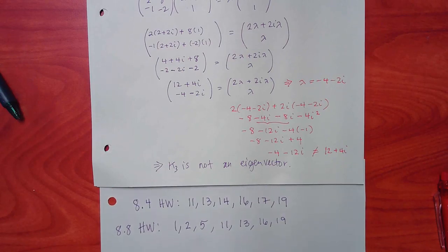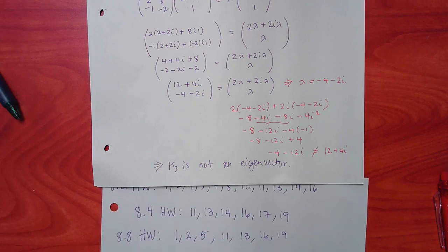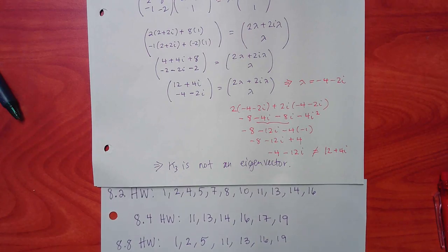If you do all of 8.2 this weekend and all of 8.4 this weekend and the first three problems of 8.8, you're setting yourself up for having a whole week just to do four problems. Or you can wait until after Tuesday and then you have a whole week to do the whole thing. But we will see each other on Tuesday, and on Thursday you need to work on this instead of coming to class — work on all of the homework assignments.